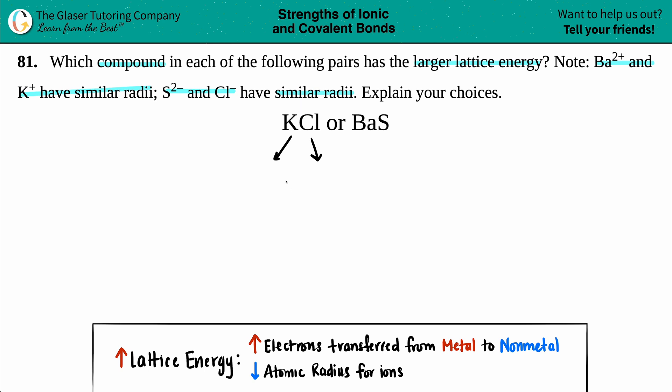Looking at the periodic table, potassium is in group one so that's a +1 charge, and chlorine is a halogen in group 7 or 17, so that's a -1 charge.